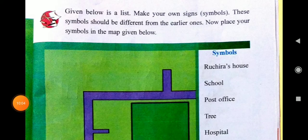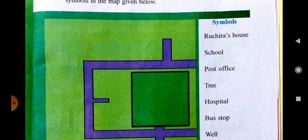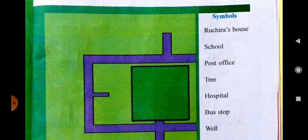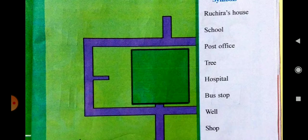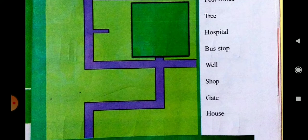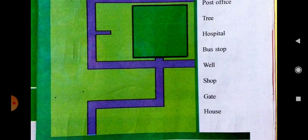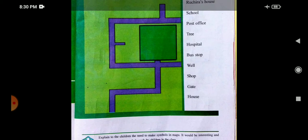Given below is a list — make your own sign, meaning symbol. This symbol should be different from the earlier ones. Now place your symbol in the place given below. You can see the places and symbols you have to make your own for: Ruchira's house, school, post office, tree, hospital, bus stop, well, shop, gate, and house.